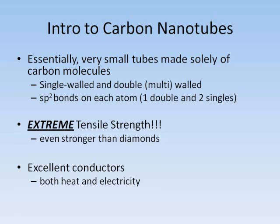The bonds on diamond's molecules are all tetrahedral, meaning that a single carbon atom bonds to other carbon atoms at four different points. In carbon nanotubes, these strong bonds are used to form a tube of carbon which, due to the strong bonds, has incredible strength.